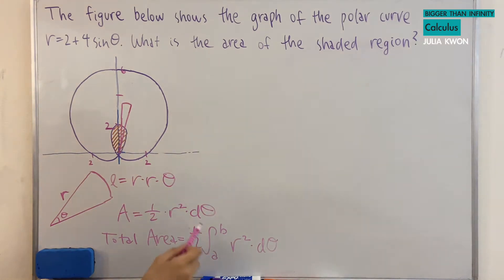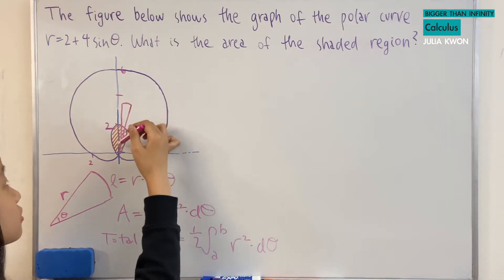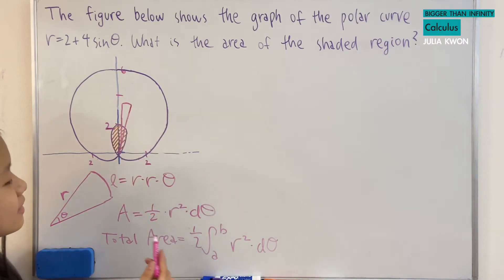So this area is just the approximate area of this one shape. And when we're taking the integral, we're taking all of these other shapes and adding them up. Okay, so this is our formula for finding the area of polar curves.